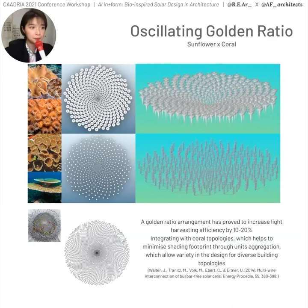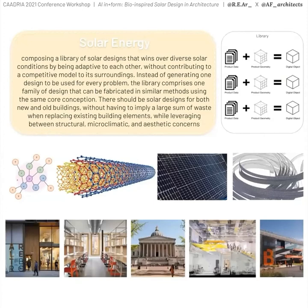How can we describe and capture — using both mathematical and natural languages — not just the complexity of form, but also their mechanism of light harvesting and their intelligence? Our workshop emphasizes options over optimal solutions, channeling this to diversify designs that can be aggregated for diverse building topologies and user demand. Instead of generating one design for every solar problem, this workshop will focus on AI-informed workflows that generate families of designs, fabricated using similar methods and the same mathematical conception.